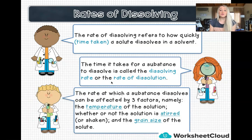The rate at which a substance dissolves can be affected by three factors. We look at temperature, whether the solution is stirred or not, and the grain size of the solute. So I'm going to quickly go into detail of all three.